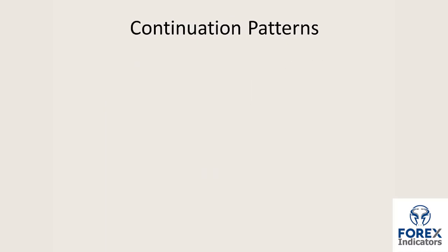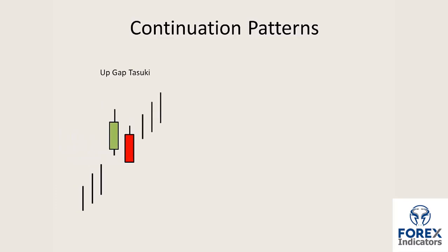Let's have a look at a few continuation patterns — this is where a signal pattern is printed and the market continues in the direction in which it was trading. Here we have what's called an upgap tozuki, a two-candle pattern. The uptrend gaps up to a green candle. It is then followed by a rejection with a red candle that opens inside the body of the prior candle and closes below the real body of the green. The market then subsequently gaps up and continues in an upward direction.